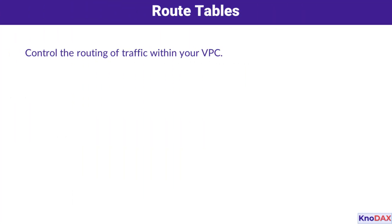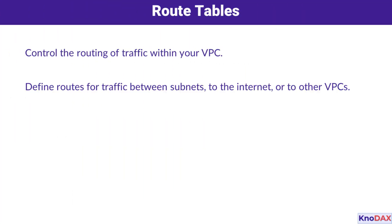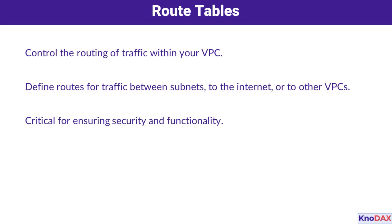Route tables are essential for controlling traffic within your VPC. By defining routes, you can direct traffic between subnets, to the internet through an internet gateway, or even to other VPCs using VPC peering. Proper configuration of route tables ensures both security and functionality, especially for private subnets, which should only route traffic to internal resources or through NAT gateways for controlled internet access.